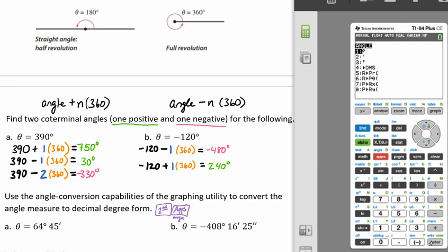So we can go ahead and put our degrees, and then 45, same thing, second, apps, and go down to minutes. And now when I hit enter, I'm going to get my decimal form, 64.75.